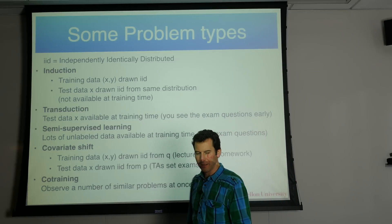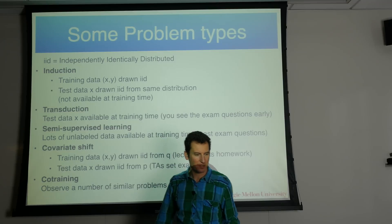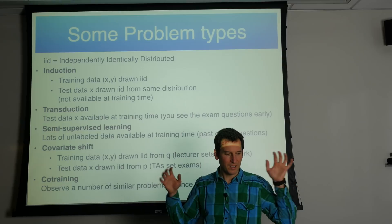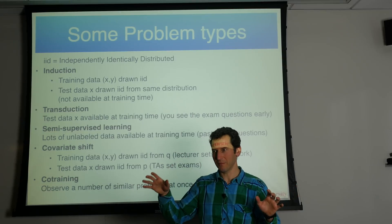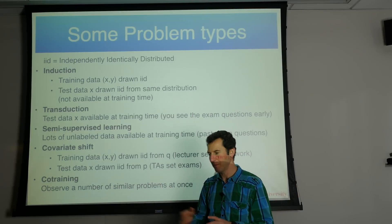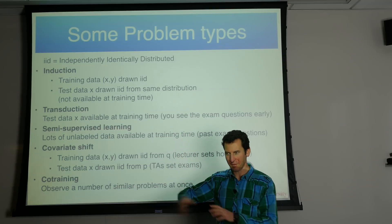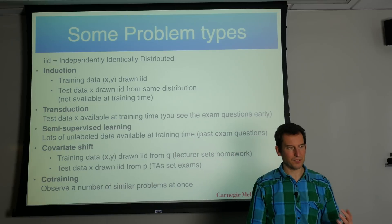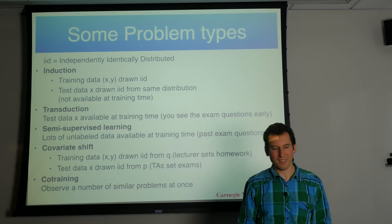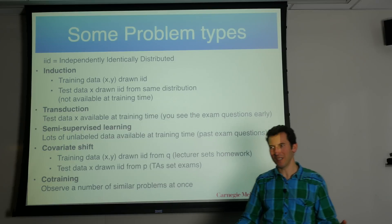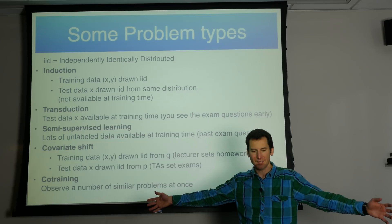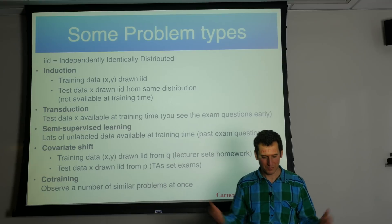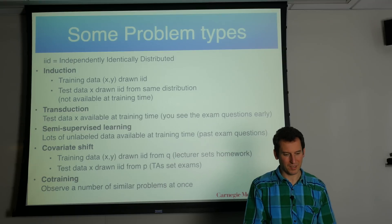One example is induction. Induction is simply, you get the training data set that's maybe drawn IID — independently and identically distributed. So it doesn't matter whether observation 3 happened at time step 3 or at time step 100. And the test data is also drawn IID from the same distribution. But the test data isn't available at training time, because otherwise it would be very easy to just predict the labels. This is basically very simple — you read a book and then afterwards somebody sets you an exam.